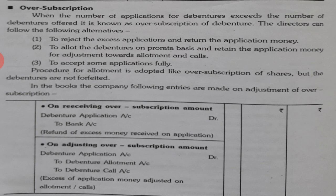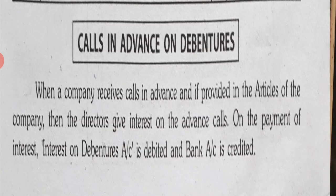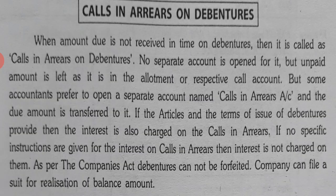Learn these entries carefully so that you will be able to solve the numericals and illustrations. If journal entries for Issue of Shares are already learned, then all the entries are the same — you only have to replace the word 'Shares' with 'Debentures'. For Calls in Advance on Debentures, when a company receives calls in advance as provided in the articles, they will have to pay interest. On payment of interest, Interest on Debentures Account is debited and Bank Account is credited, because paying interest on debentures is an expense.